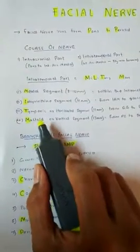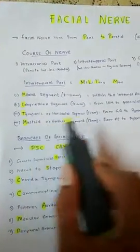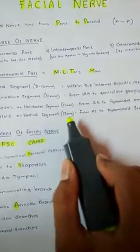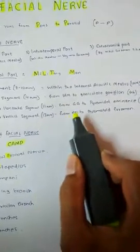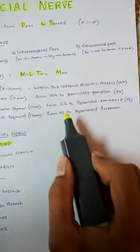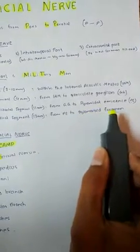The fourth part is the mastoid, M for mastoid, or the vertical segment, which is 13 mm in length, which extends from pyramidal eminence to stylomastoid foramen.